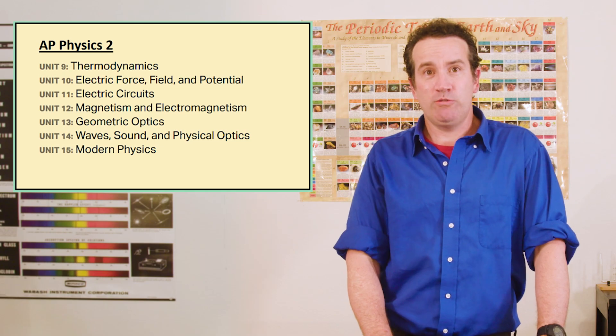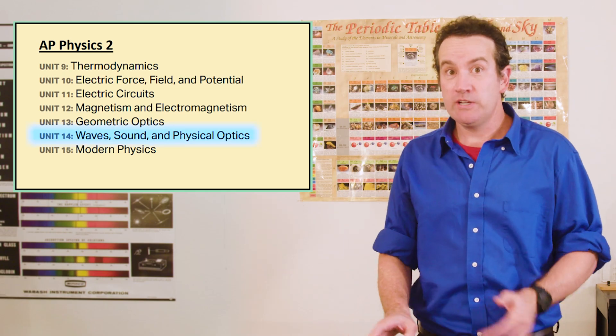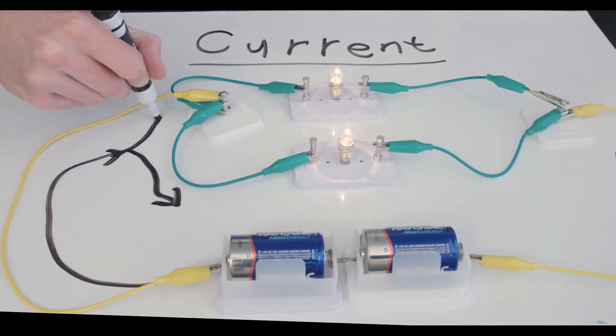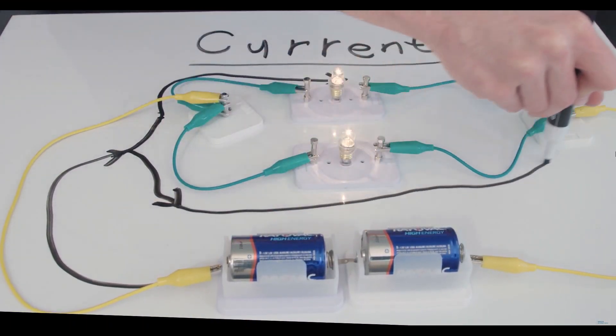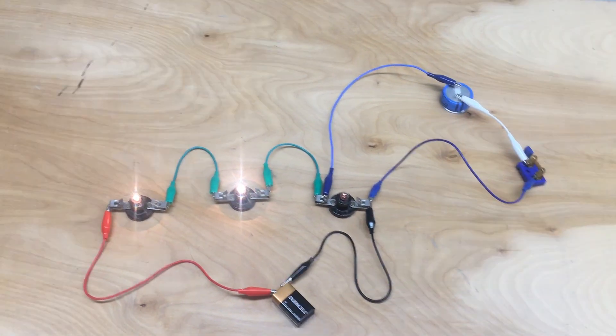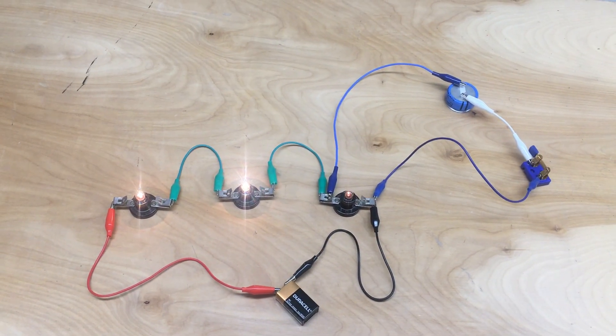AP Physics 2 will now include waves and sound, including standing waves, and all the circuits curriculum that was previously part of the old AP Physics 1. Additionally, a qualitative treatment of RC circuits is included, as well as specific heat.